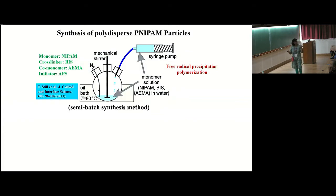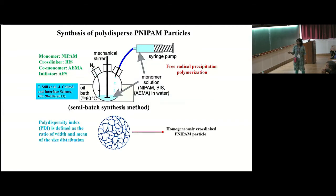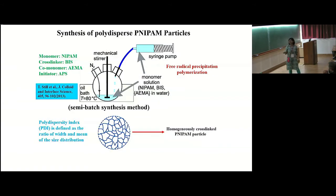So, basically, the NIPAM particles polymerize to form P-NIPAM hydrogels. So, these are highly cross-linked particles that look like this. In this method, there are a couple of different ways of doing it. What I am showing you is what is called the semi-batch method. You get rather homogeneously cross-linked P-NIPAM particles.